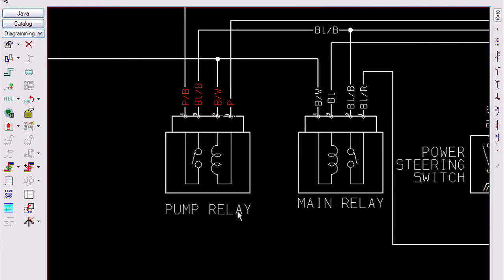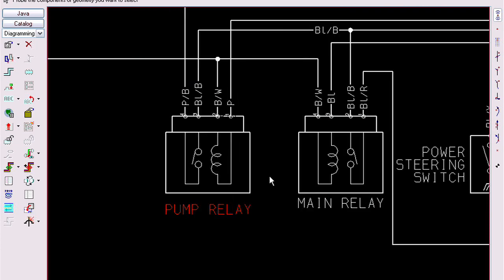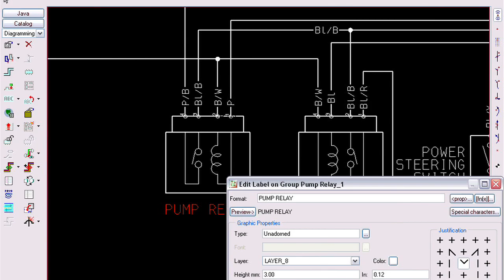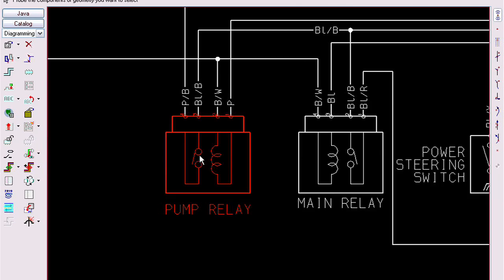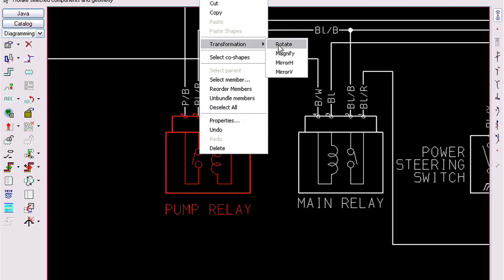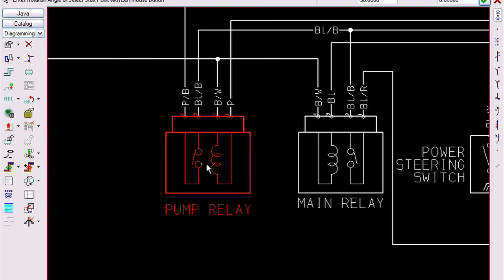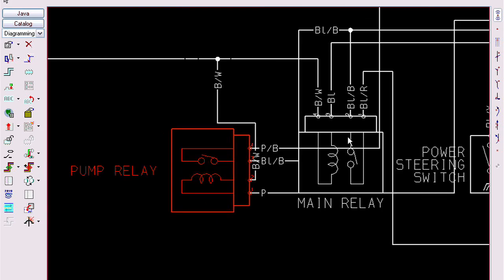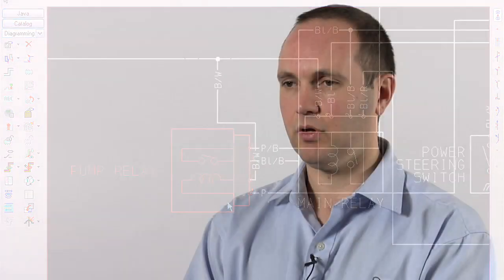We've also controlled labels on instances. An instance can be of a block or a group. This can be a connector, it can be a pump, it can be a lamp, anything you like. Now when you rotate that pump, you can now control whether the label is rotated with the pump or it stays horizontal to the design sheet.